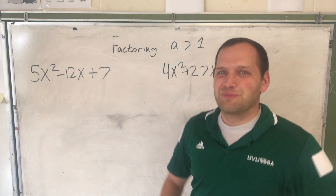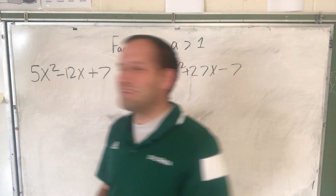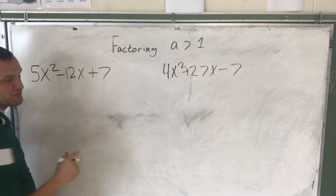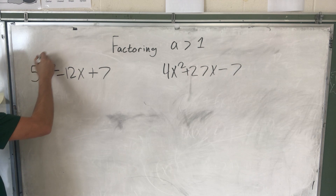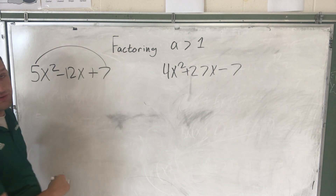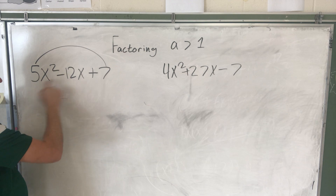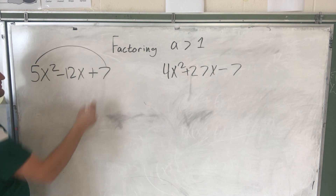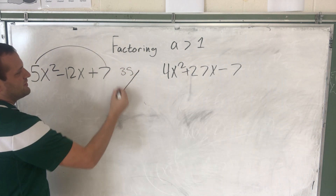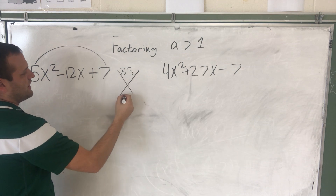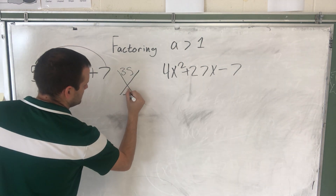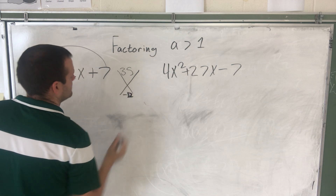Without further ado, let's get started. We're going to start off with the exact same steps as last time. Number one: multiply a and c. This is often referred to as the AC method. So 5 times 7 is 35. Now we need two numbers that multiply to be 35 but add up to negative 12.